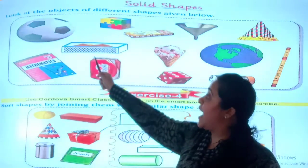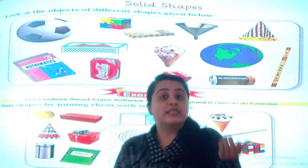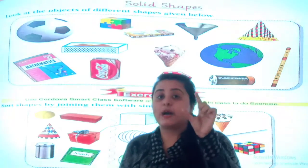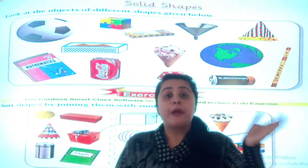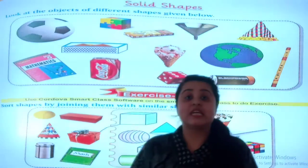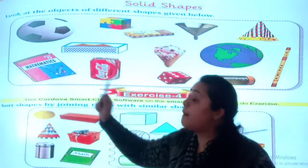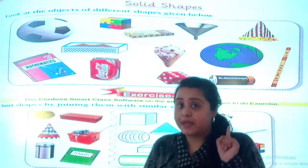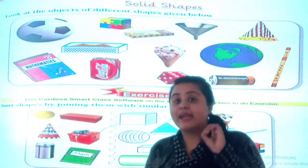Now it comes to the matchbox. A matchbox is something you usually see at home — it is used to light things. Sometimes you can find this matchbox in the kitchen also, but you don't have to use it. This matchbox is in rectangular shape. Now it comes to the mathematics textbook — it is also rectangular in shape, and it is solid.